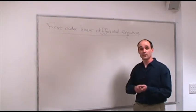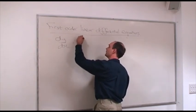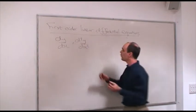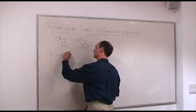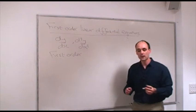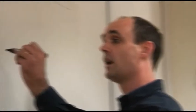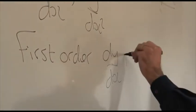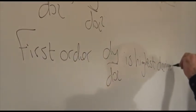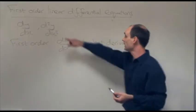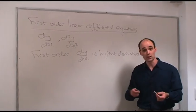A differential equation is an equation involving derivatives like dy/dx or d²y/dx². First-order means that there are no higher derivatives than dy/dx — so dy/dx is the highest derivative. That means you won't have anything like d²y/dx² or d³y/dx³ in your differential equation.